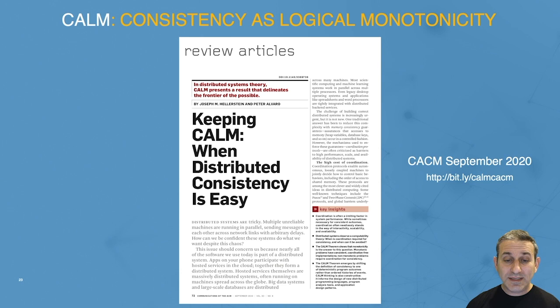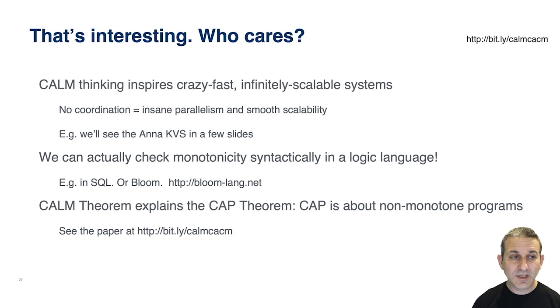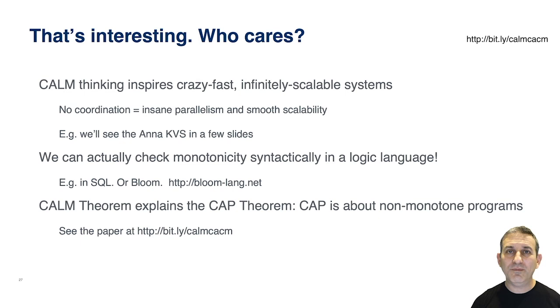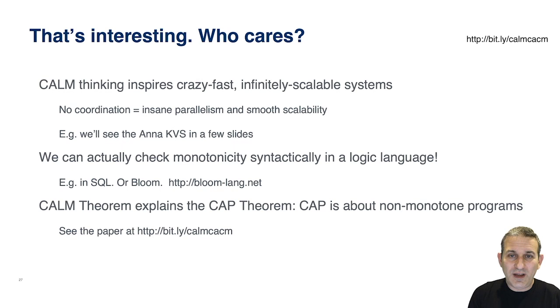In this month's CACM — September 2020 — we have an article, myself and Peter Alvaro, where we go through the CALM theorem, give some of the roots, and explain the proof in enough detail for a typical computer scientist. We also talk about how CALM thinking can affect how we build distributed systems and perhaps the programming languages we build for distributed programming. If you really embrace monotone programming, you can build crazy fast, infinitely auto-scaling systems. When there's no coordination, when no thread ever waits for any other thread, you get insane parallelism and very smooth scalability. We'll see this in the Anna Key Value Store in a few slides.